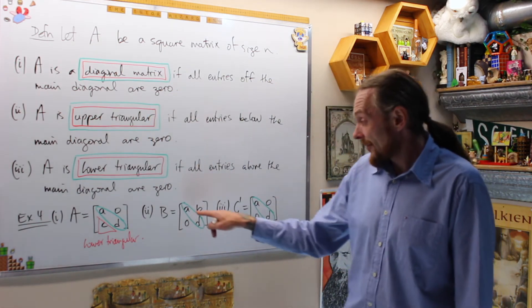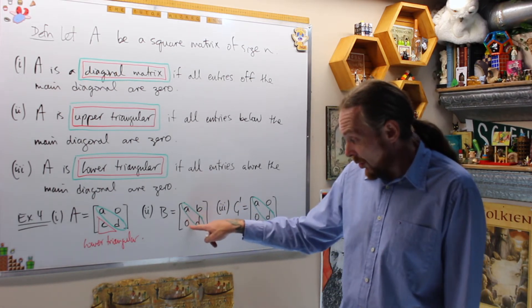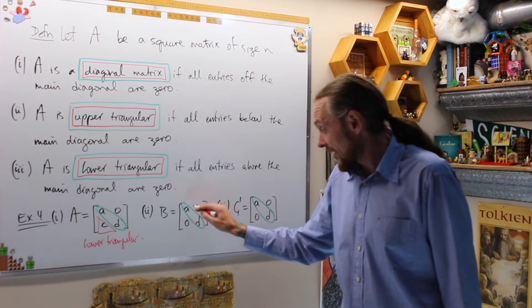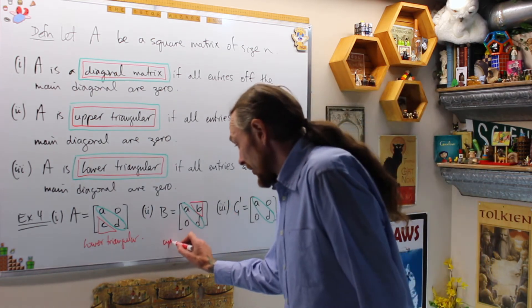For B we have [a, b, 0, d]. This is the main diagonal. I have zeros below the main diagonal. This means that we have the information in the upper triangle and this is upper triangular.